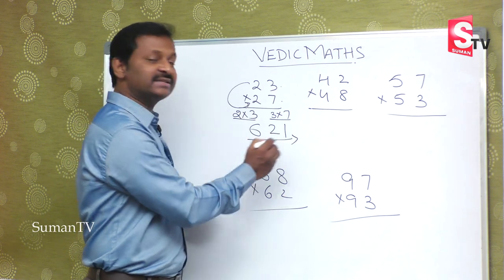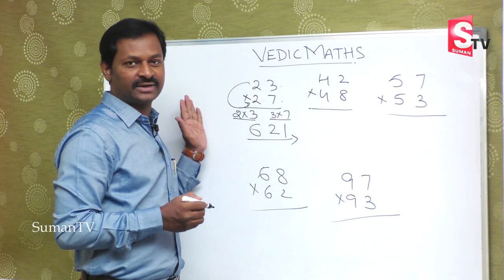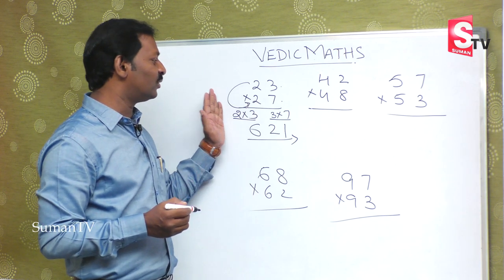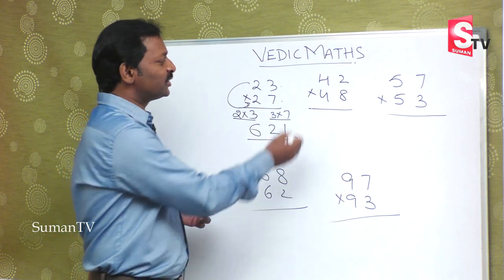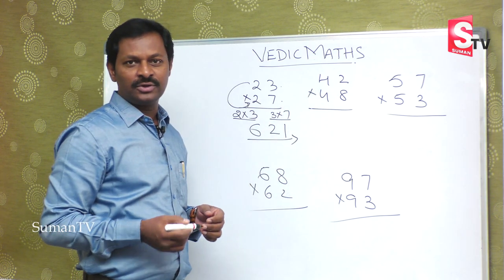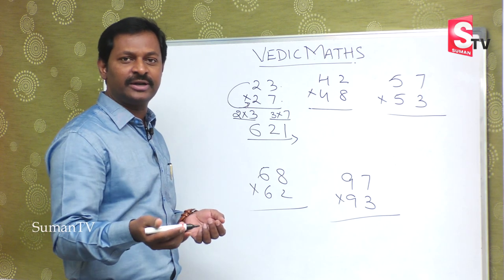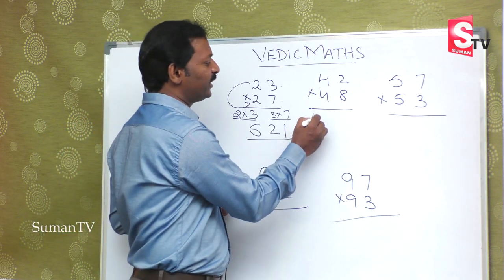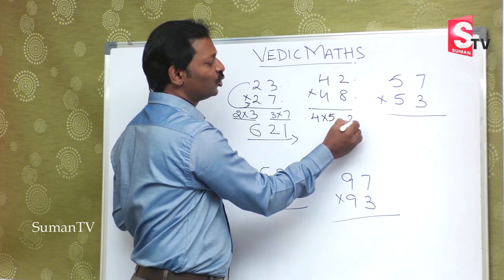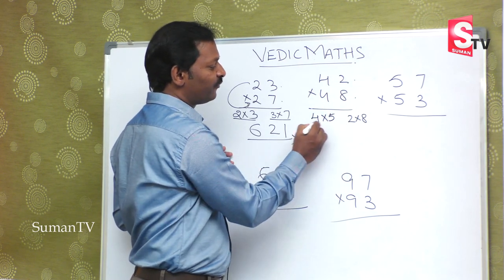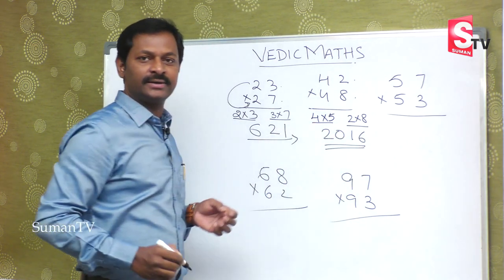So we are writing from left side to right side — the regular method goes right side, but here left to right. For 42 multiplied by 48: 4 is the first number, then continuation number into 5. That is 4 into 5 is 20, and next 2 into 8 is 16.